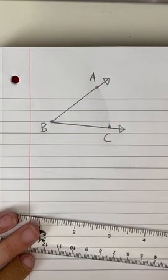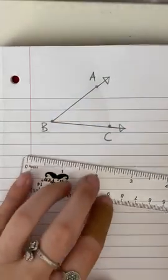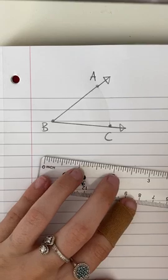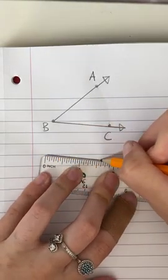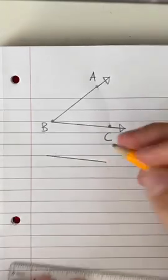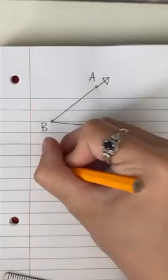The first step to copying the angle is to draw a segment that's parallel to BC, and we're going to call it DE. Make sure you label it.